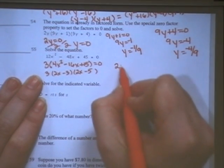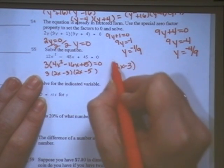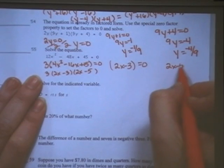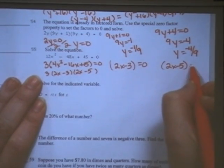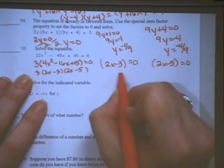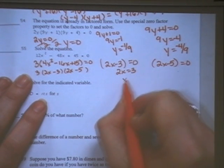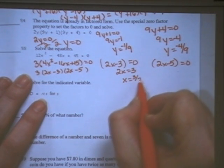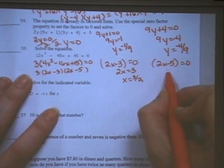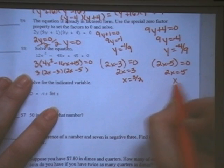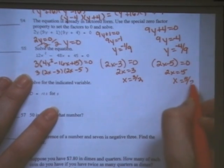So I take the 2x minus 3, set it equal to 0, and the 2x minus 5, and set it equal to 0. Move my 3 over, that's 2x is equal to 3, divide by 2, x is equal to 3 halves. Move my 5 over, and 2x is equal to 5, divide by 2, and x is equal to 5 over 2.